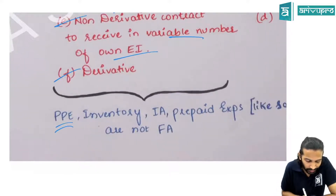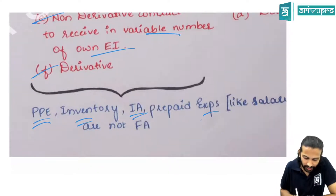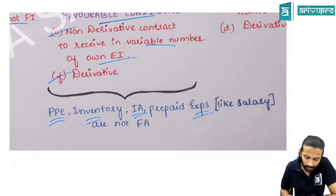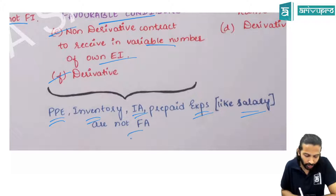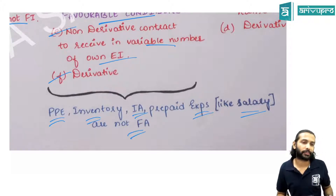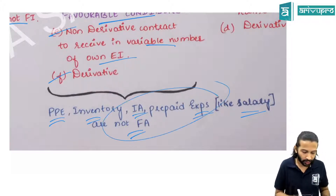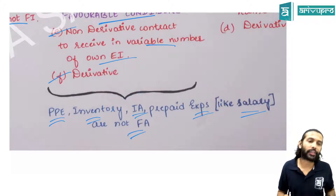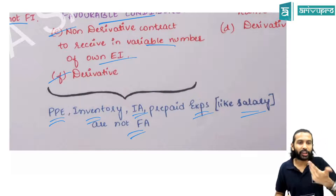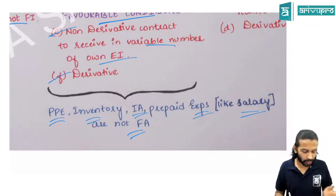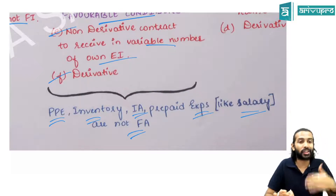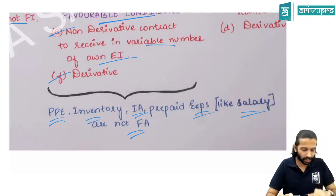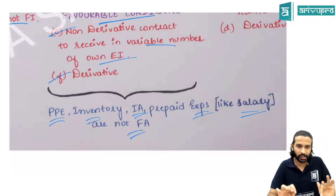PP&E, inventory, intangible assets, and prepaid expenses like salary paid are not financial assets, because we don't have a contractual right to receive cash on them. There may be an opportunity to generate cash, but without a contractual right to receive cash, they are not financial assets.